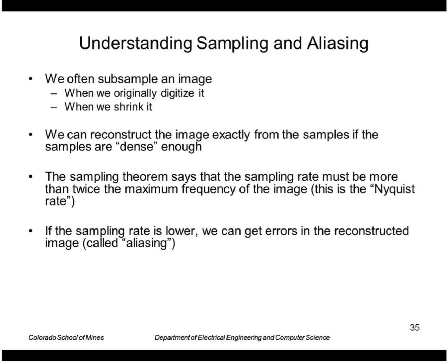If you don't sample at that rate, if the sampling rate is lower, then you can get errors in the reconstructed image called aliasing.